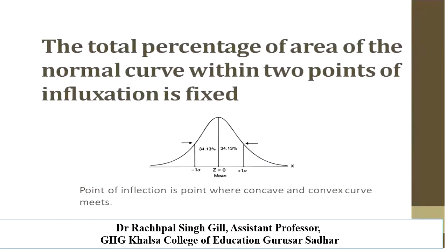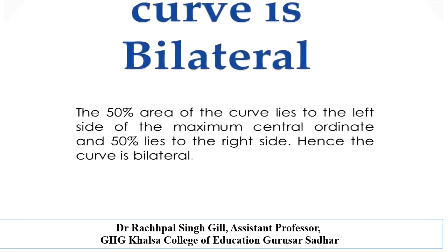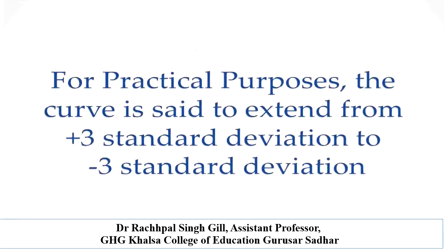The total percentage of area of the normal curve within the two points of inflection is fixed. The point of influx occurs at minus one sigma and plus one sigma. The value is fixed: on the left-hand side at minus one sigma it is 34.13%, and on the right-hand side at plus one sigma it is 34.13%. The curve is bilateral: 50% of the area lies to the left side of the maximum central ordinate and 50% lies to the right side. For practical purposes, the curve is said to extend from minus 3 standard deviations to plus 3 standard deviations.